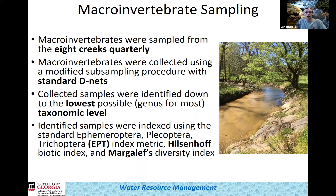For macroinvertebrate sampling, we sampled eight creeks quarterly using modified procedures from published papers and collected specimens with standard D-nets. After collection, they were identified to the lowest possible taxonomic level and preserved. I used three metrics: the EPT metric (Ephemeroptera, Plecoptera, Trichoptera — mayflies, stoneflies, and caddisflies), the Hilsenhoff Biotic Index, and Margalef's Diversity Index.